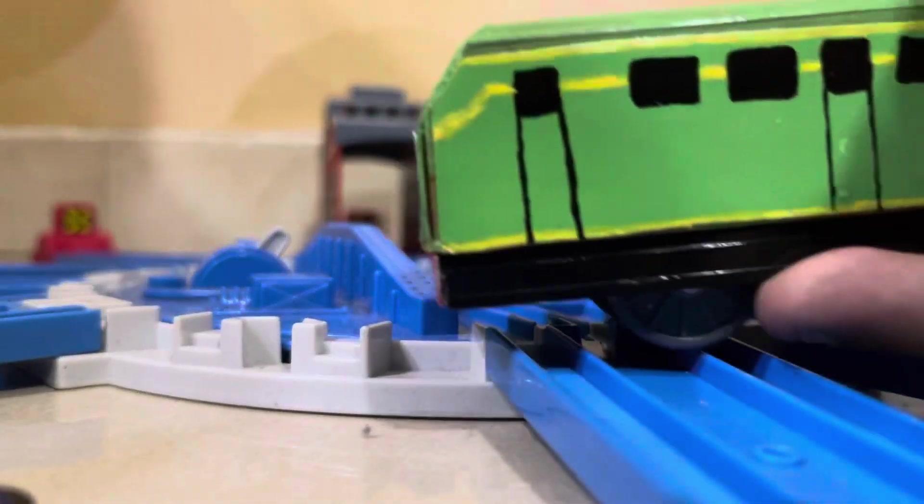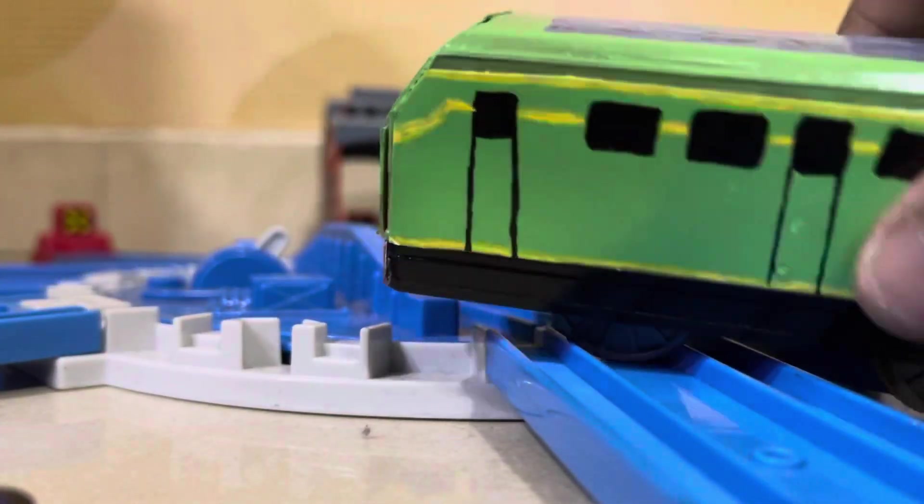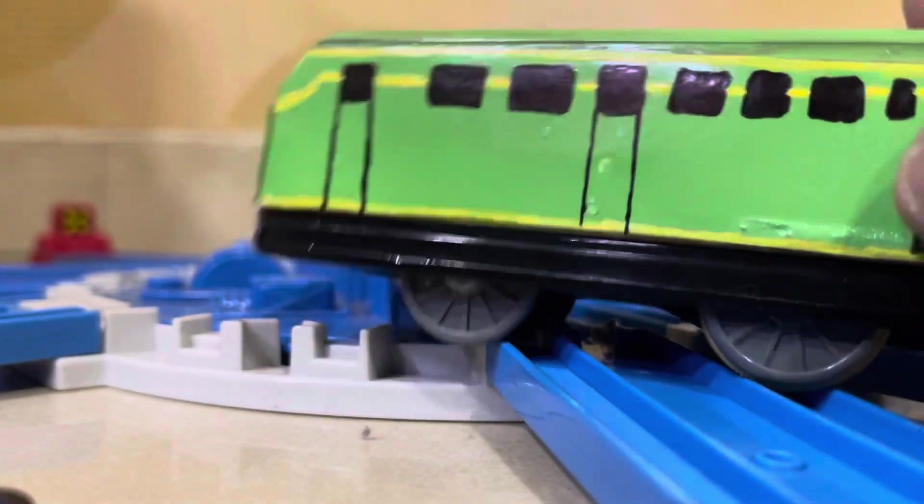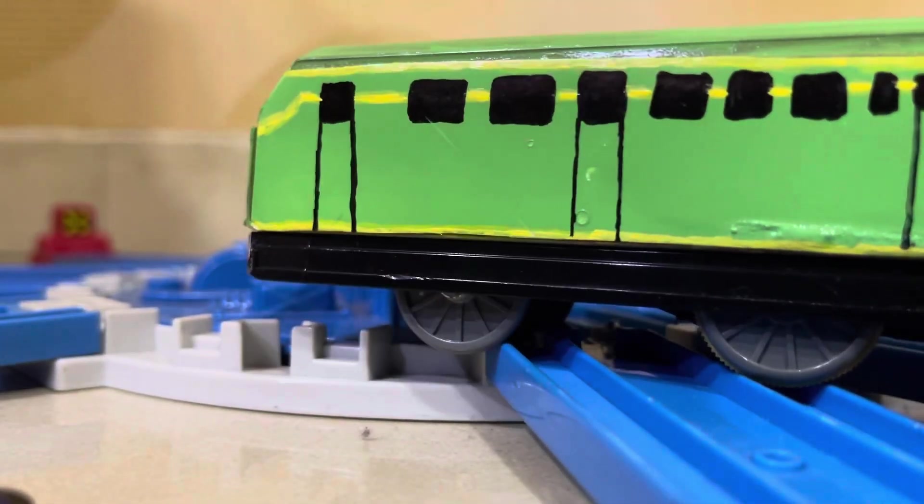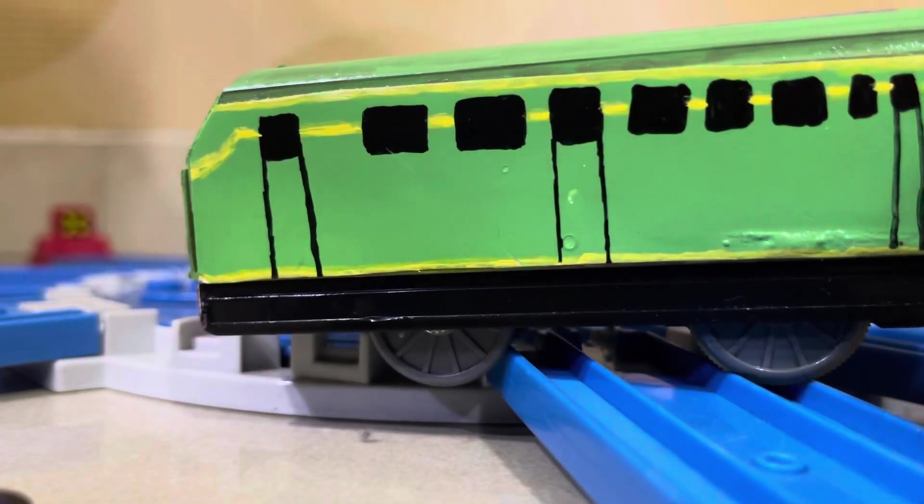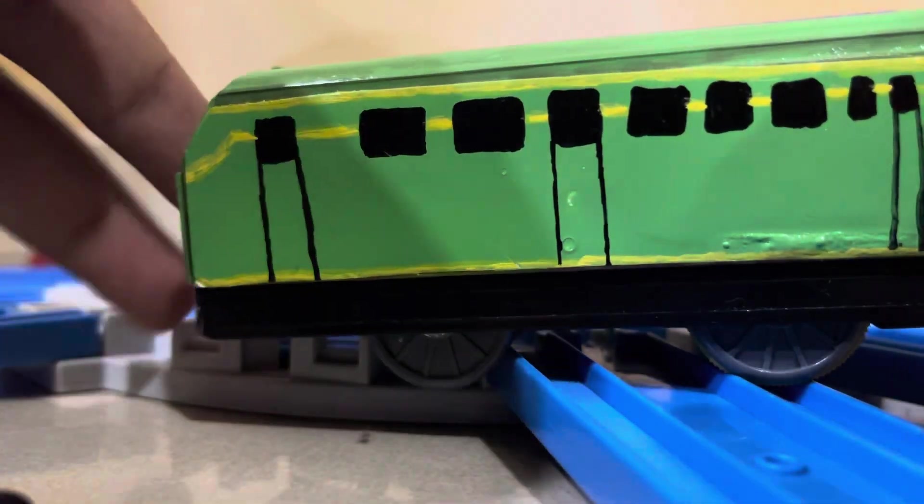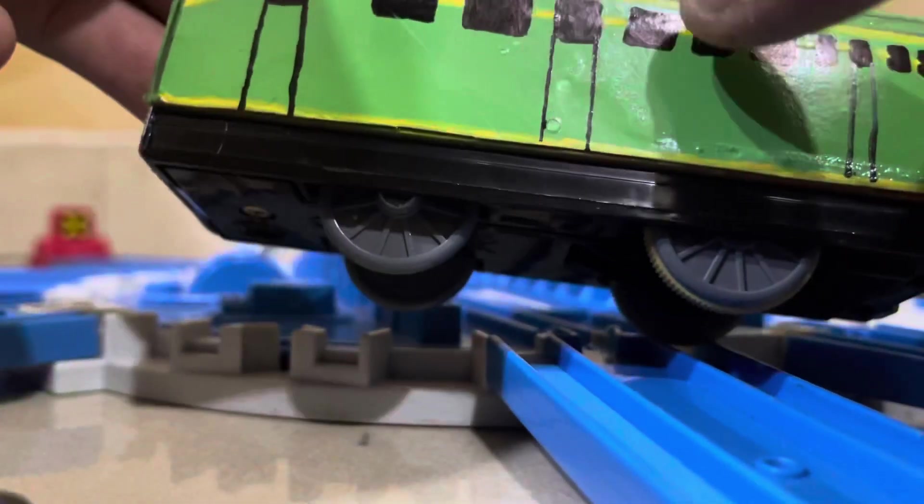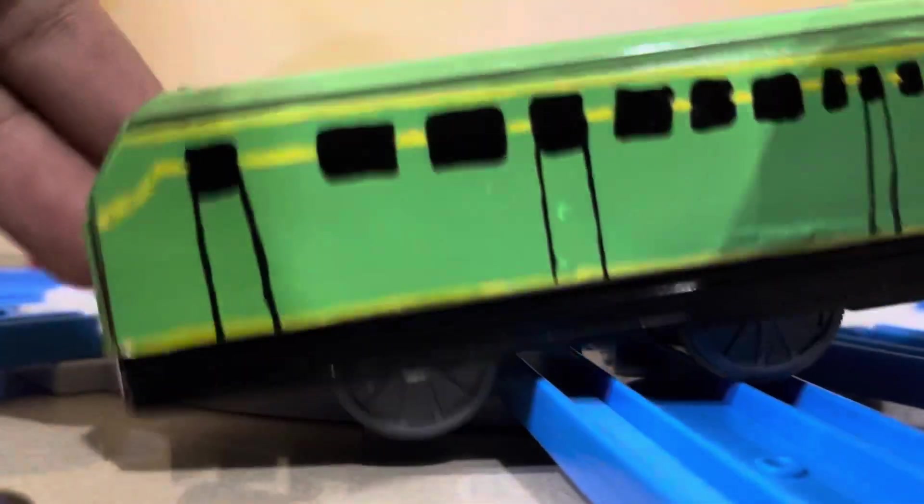After that, I spray painted it apple green with Mr. DIY spray paint. And after it dried, I did some details. First, let's talk about the yellow lining. The yellow lining was actually done by Uni paint, the yellow Uni paint.